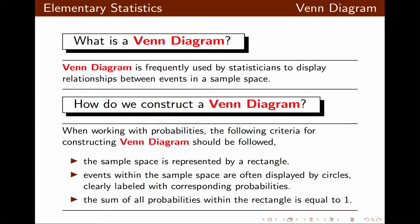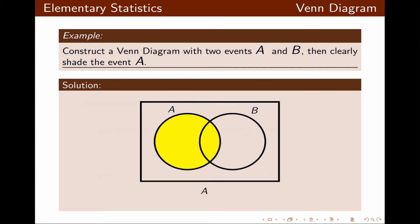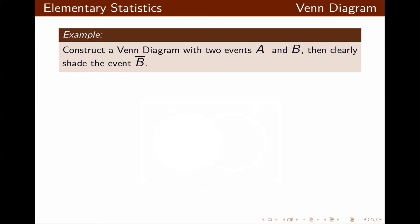Let's construct a Venn diagram with two events A and B and clearly shade event A. Inside the rectangle I have two circles, properly labeled A and B, representing events A and B. Event A is shaded, meaning circle A is shaded.